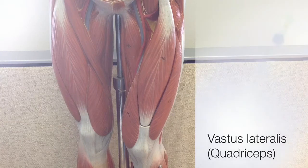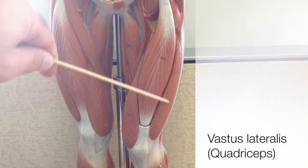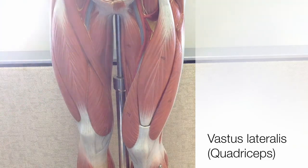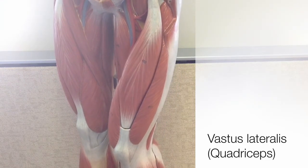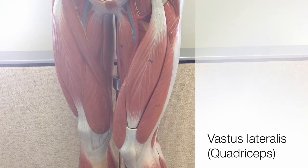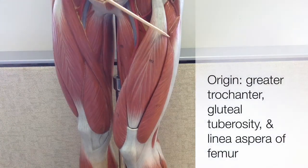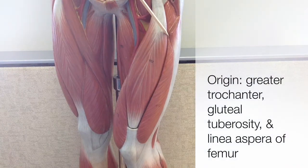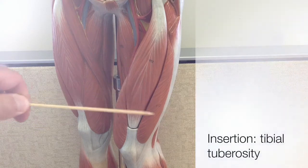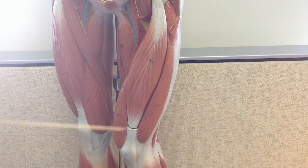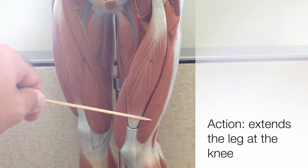The third quadricep muscle is the vastus lateralis, located on the lateral side of the anterior thigh. We can rotate the model to show more of that muscle. The word vastus, by the way, means huge, which refers to the size of this pair of muscles. Its origins are on the greater trochanter, gluteal tuberosity, and linea aspera of the posterior thigh. Like the other quadricep muscles, the lateralis inserts onto the tibial tuberosity, and it extends the leg at the knee — the same action as the vastus medialis.